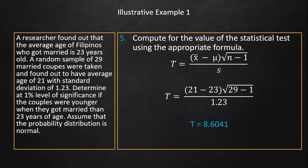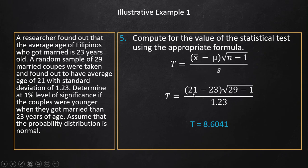Step five — apply the t-test formula. Sample mean is 21, population mean is 23, n is 29. So: t = (21 − 23) × √(29 − 1) / 1.23. Subtracting first gives −2, then multiply by √28 and divide by 1.23, yielding 8.641.